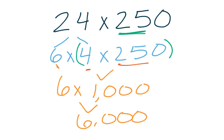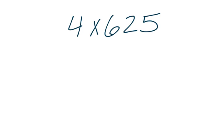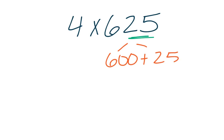Remember those peanut butter and jelly numbers — that 4 and that 25 go together really nicely. Other numbers that go together nicely are 10 times 10. Here's another strategy using the distributive property. I see this 625, and I really want to work with that 25. I'm going to take 625 and break it up into 600 plus 25, then multiply that times 4 and use the distributive property to break this up.